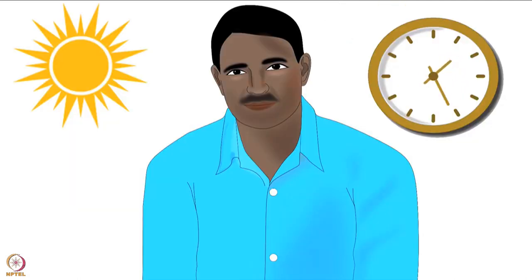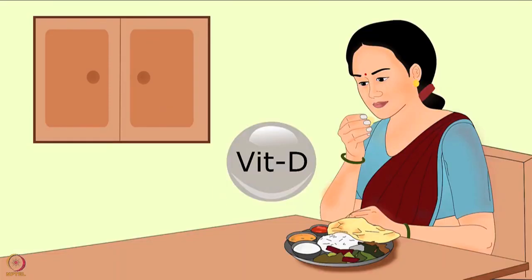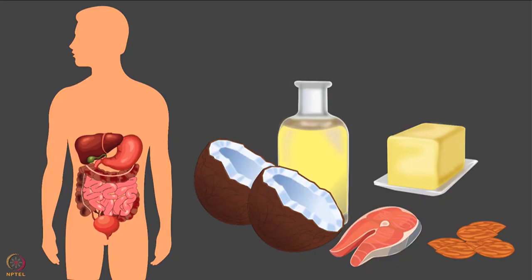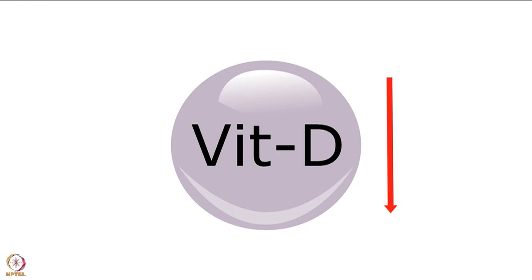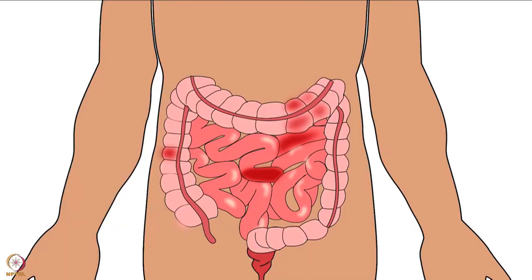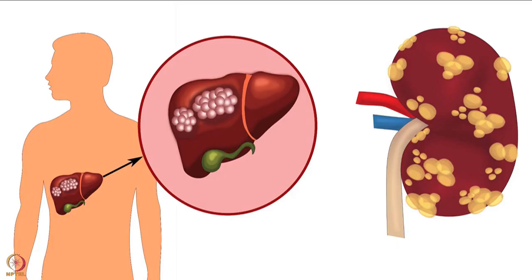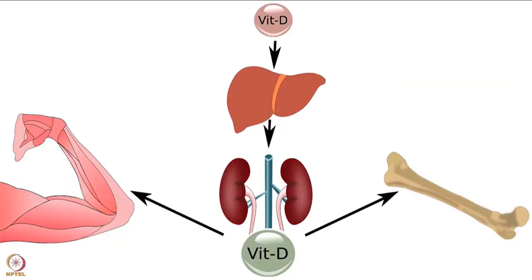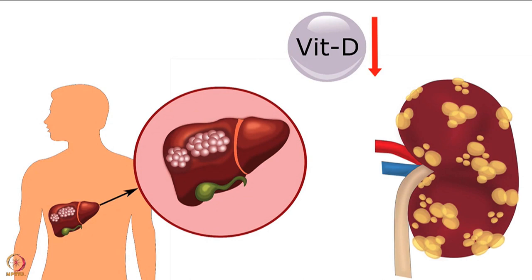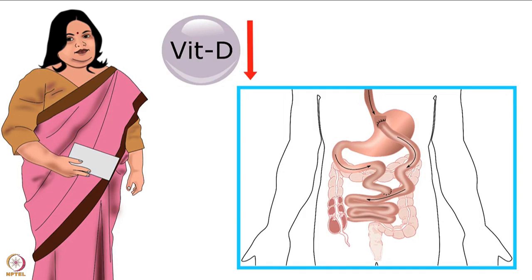Inadequate dietary intake of vitamin D is another risk factor. Since vitamin D requires fat for absorption, people with reduced ability to absorb fat — such as those with gallbladder or intestinal diseases — can become deficient. People with liver or kidney diseases are also at risk, as conversion of vitamin D to its active form takes place in those organs. Obese individuals and those who have had bypass surgery can also become deficient.